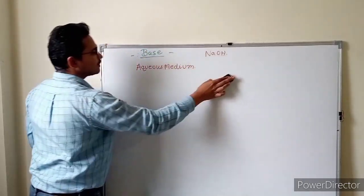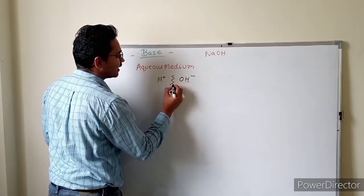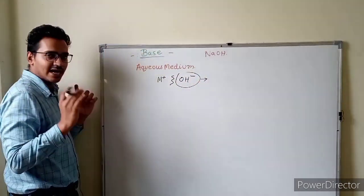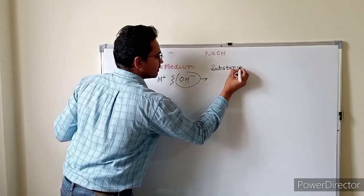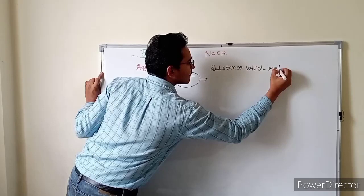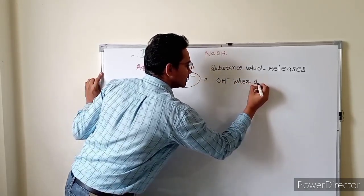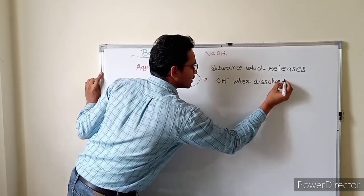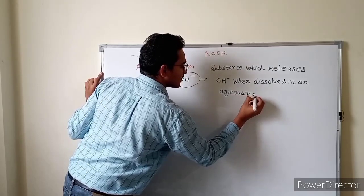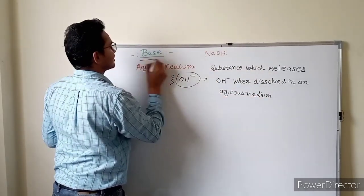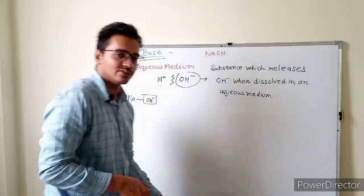So when NaOH goes into water, the hydroxyl ion separates and the metal becomes positive. Since it released hydroxyl ions upon dissolving in water, the substance that releases hydroxyl ions in aqueous medium is called a base. A base is a substance which releases hydroxyl ions when dissolved in an aqueous medium. So Na⁺ separates and OH⁻ is released — that is the Arrhenius definition of base.